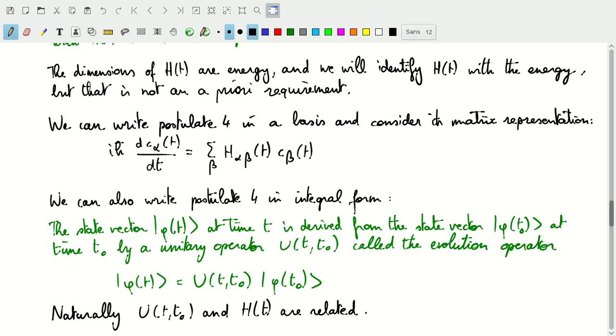And so first of all both of those will have to be normalized. So when we go from one normalized state to another normalized state there will be a unitary operator involved and that is called the evolution operator.